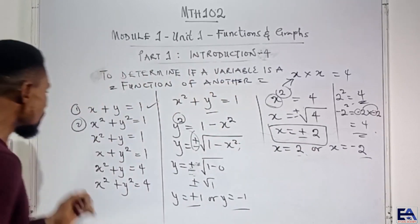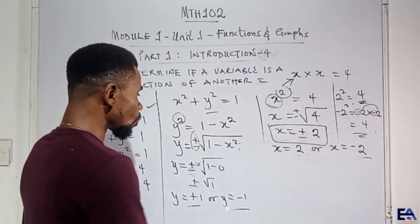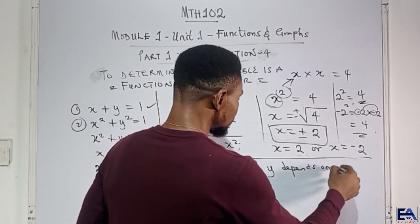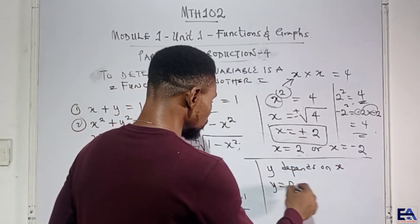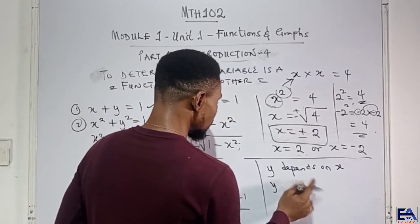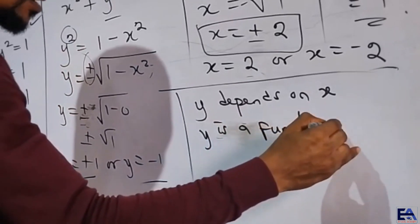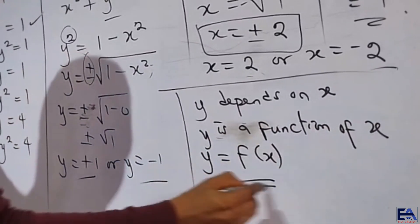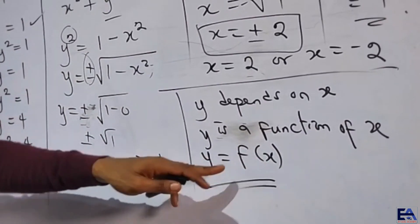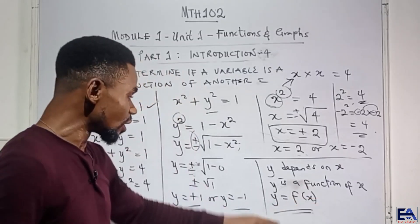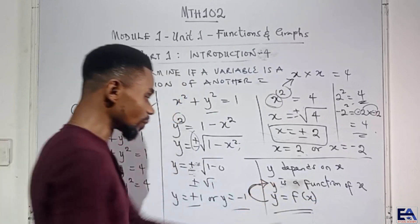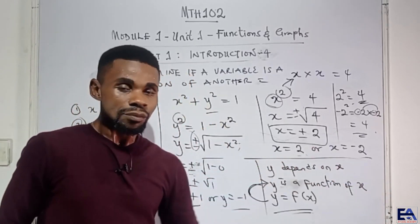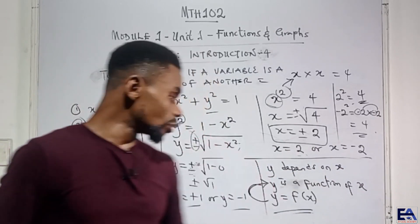Now I want to bring you to an important notice. Whenever we say something depends on something — if I say y depends on x — in any situation it means y is a function of x. Don't forget this; we are going to need it in the next class. So it means y is f of x. It is not f multiplied by x; it is actually f as a function of x. Take note: if y depends on x, it means y is a function of x. But if y does not depend on x, then no story.